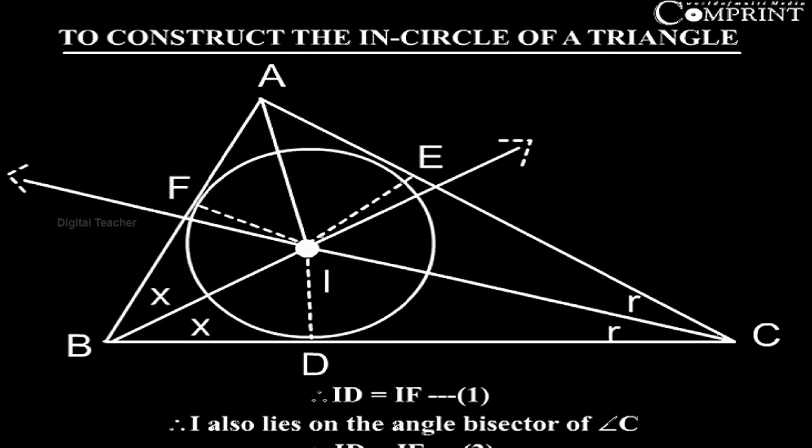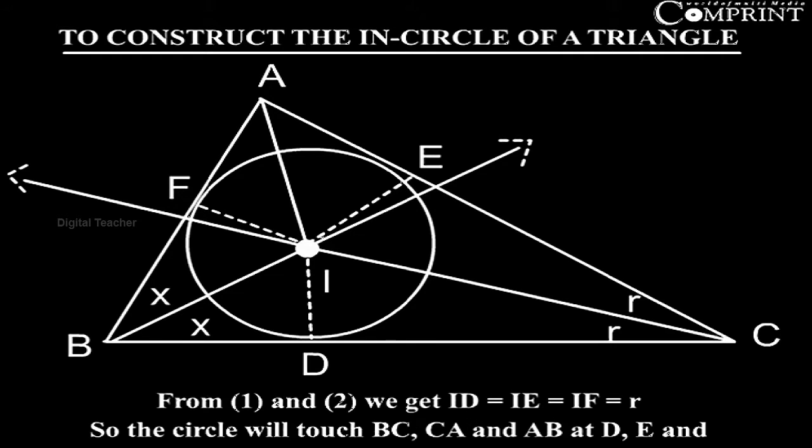Therefore, I also lies on the angle bisector of angle C. Therefore, ID equal to IE, equation 2. From 1 and 2, we get ID equal to IE equal to IF equal to R.